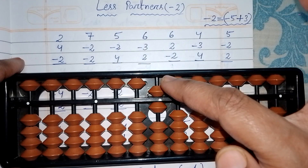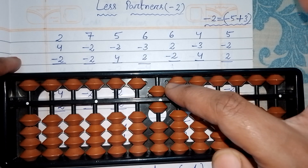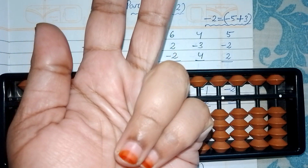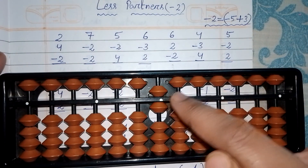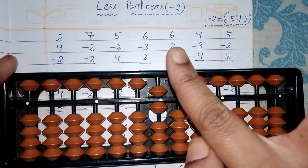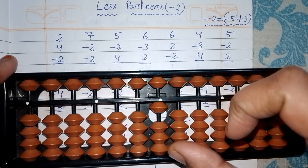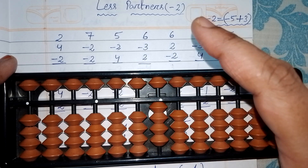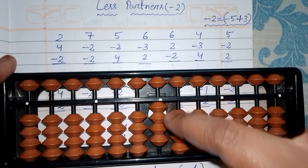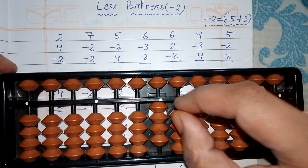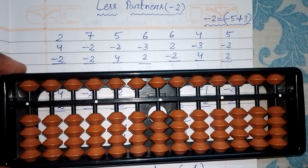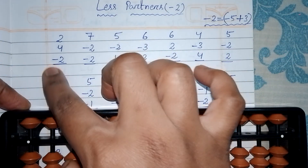Five is down, so this is called less partner. Partner of less two: open five fingers, close only two fingers — three fingers are left, so partner of less two is three. Push up five with your index finger and add three with your thumb finger. The answer is four. Set zero and write the answer four.